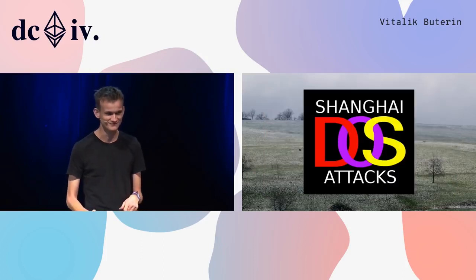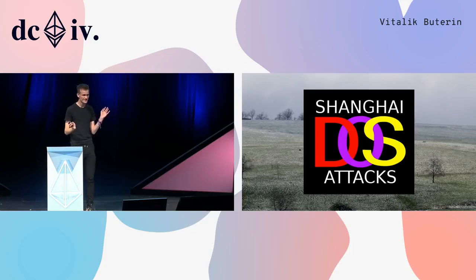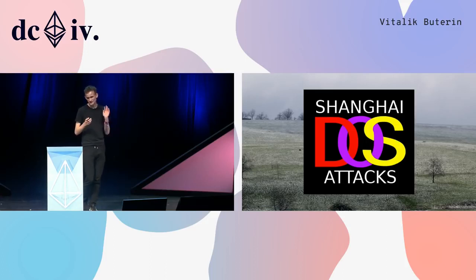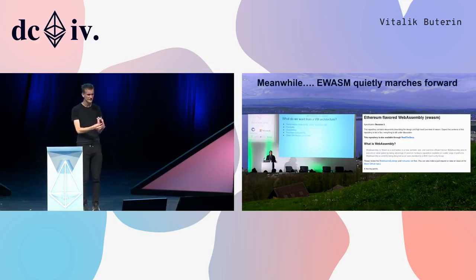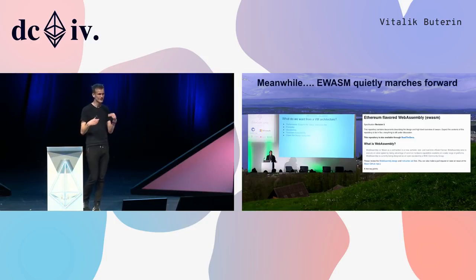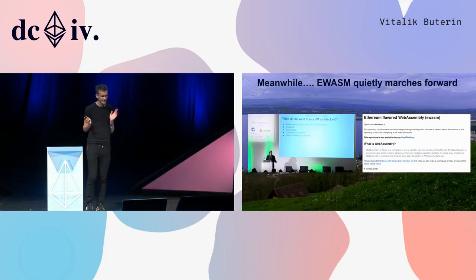The DAO hack and the DoS attacks ended up delaying a lot of people's time and attention by potentially up to six months. But even still, work moved forward: ewasm moved forward, work on the virtual machine moved forward, and work on alternatives like EVM 1.5 moved forward. People were still continuing to get a better idea of what a more optimal blockchain algorithm would look like from many different angles.